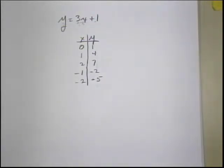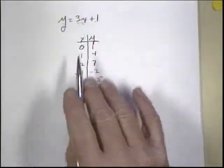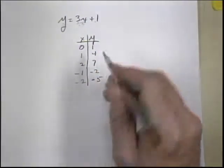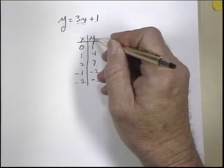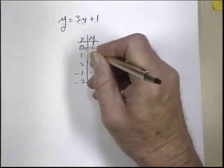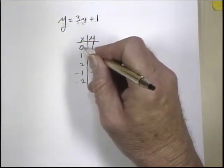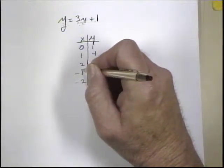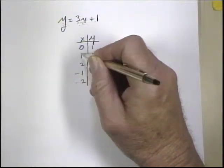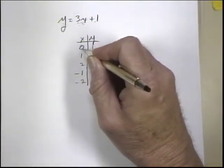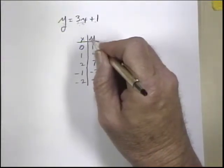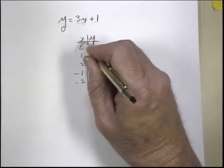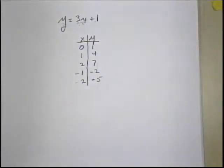The y component of the ordered pair, the y value, depends on — or is dependent on — the value that we assume for x. Once we assume a value for x, we can calculate the y, but the y is dependent on the value of x.